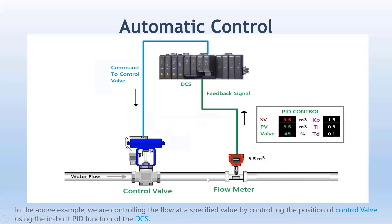Here is another example to understand the PID concept. This is a water flow system with a control valve that regulates the amount of water coming in and a flow meter. You set a value of 3.5 — you want the flow to be 3.5. In this scenario the PV is also 3.5. This flow meter or flow transmitter is connected to a DCS — this is a Delta V DCS — specifically to the analog input module of the DCS system.